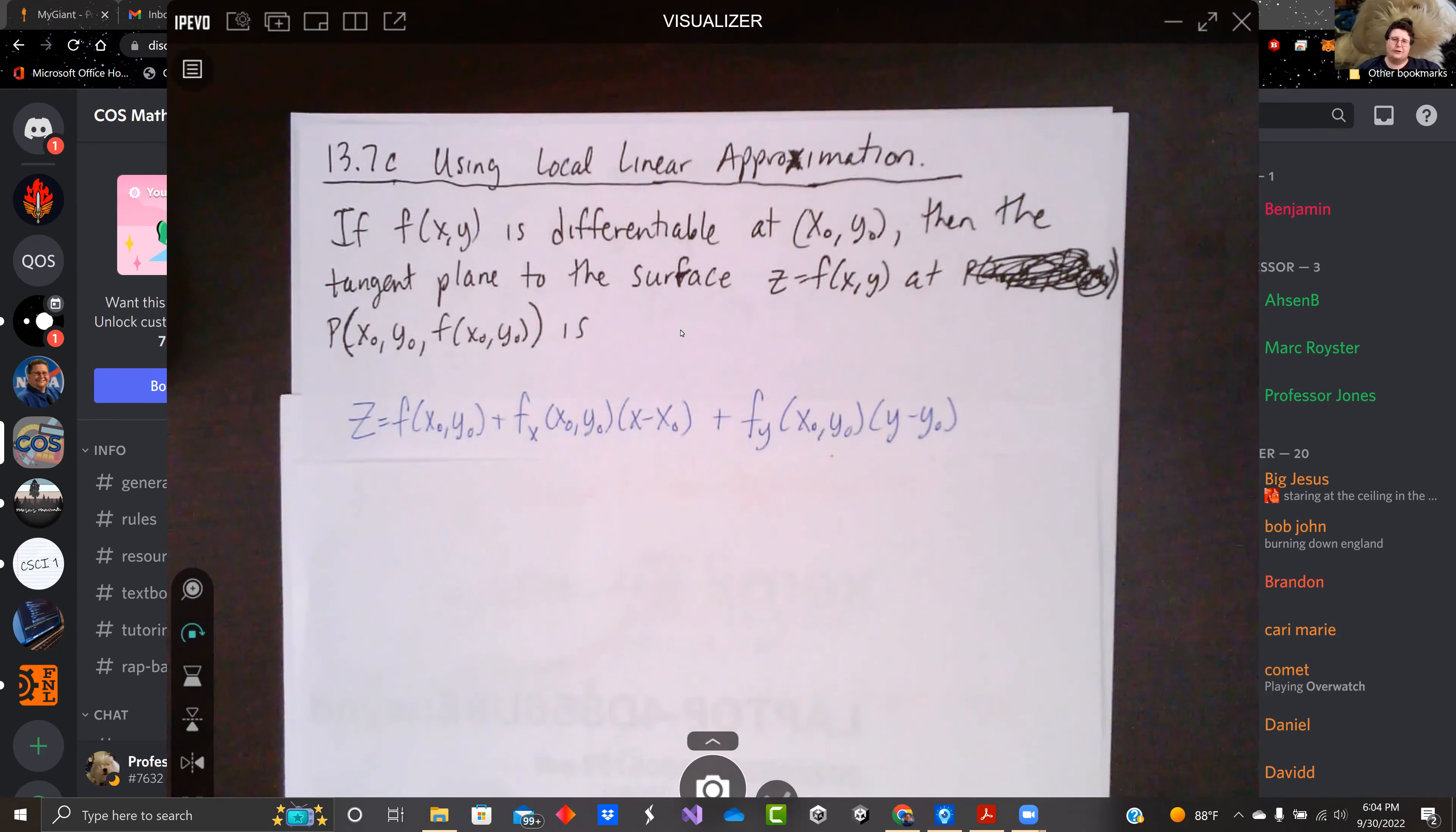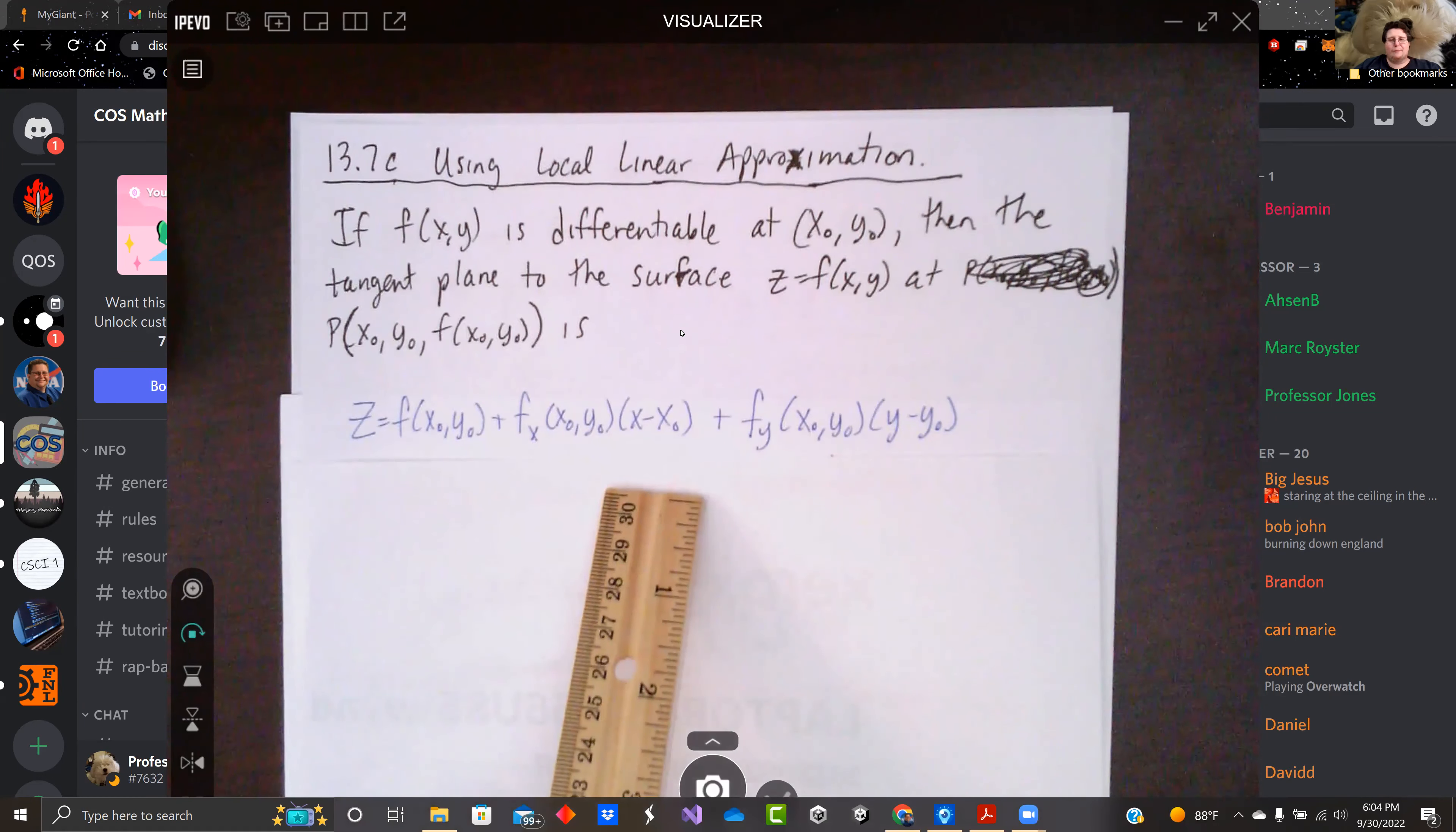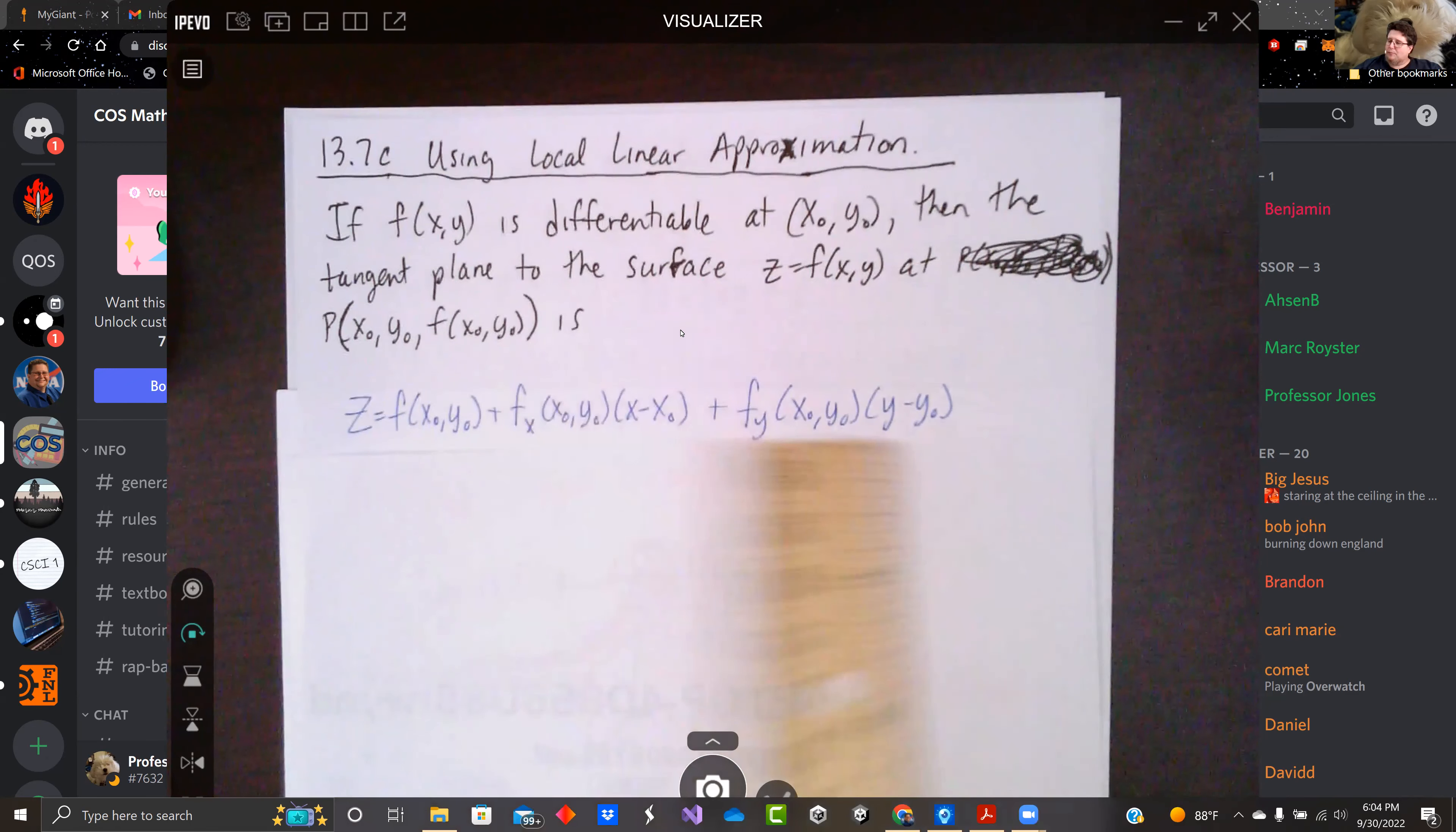Now, we can show that z, or it can be shown - we're not willing to show it - but z is the function evaluated at that point, plus the partial derivative evaluated at that point times (x - x₀), with respect to x, plus the partial derivative with respect to y evaluated at that point times (y - y₀).